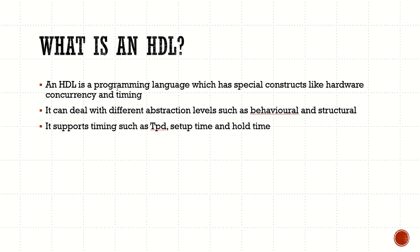Concurrency is a necessary element in digital circuits, so we are learning another language called Hardware Description Language for designing digital circuits. The timing construct is also not available in programming languages but is available in hardware description languages. It can deal with different abstraction levels such as behavioral and structural level. It also supports timing such as propagation delay, setup time, and hold time — all of which we can specify using hardware description language.